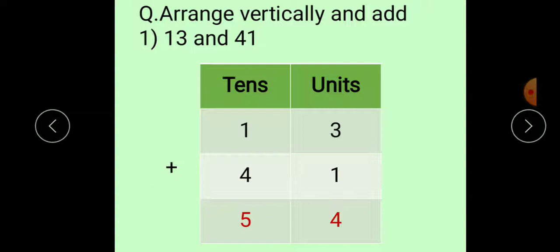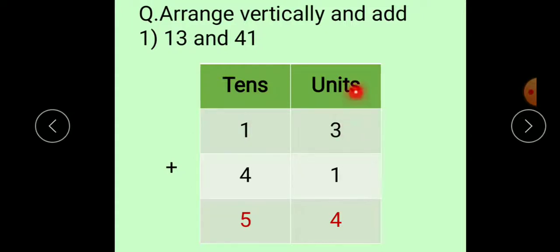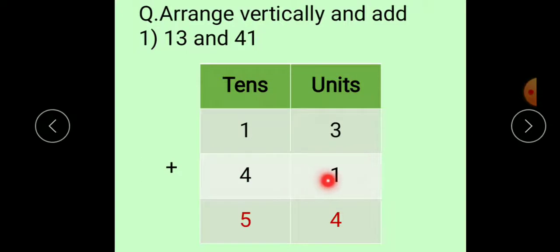First of all, we have to write the places. So, tens and units. As there are two digits, two places will be there: tens and units. Now, first number is 13. The place of 1 is tens and the place of 3 is units. So, we put the number here: 1 at tens place and 3 at units place. We have to add the numbers, so this is the sign of addition. Plus 41, where 4 is at tens place and 1 is at units place. So, we write 4 at tens place and 1 at units place.